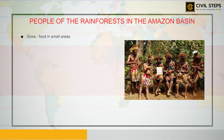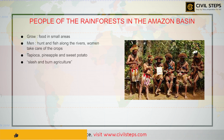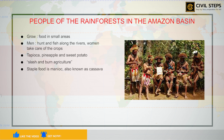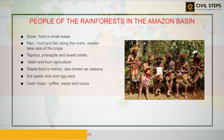People grow most of their food in small areas after clearing some trees in the forest. Men hunt and fish along the rivers while women take care of the crops, mainly growing tapioca, pineapple, and sweet potato. They practice slash and burn agriculture. The staple food is manioc, also known as cassava, which grows underground like a potato. They also eat queen ants and egg sacks. Cash crops like coffee, maize, and cocoa are also grown.